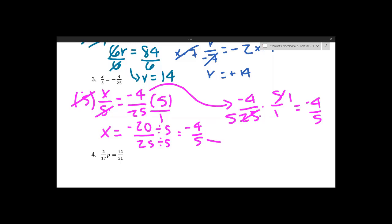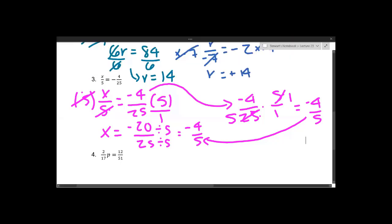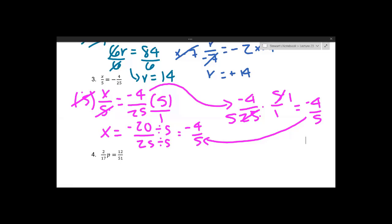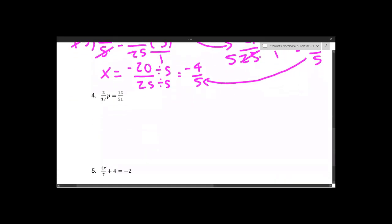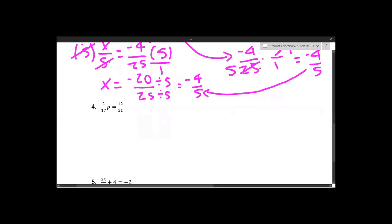Alternatively, if you considered cross-canceling when multiplying negative 4 over 25 by 5: 5 is a factor of 25, so you can divide both by 5, leaving negative 4 fifths times 1, which is negative 4 fifths — already in simplest form. Cross-canceling can be a useful tool because if you multiply all the way through you can end up with really large numbers that are harder to simplify.